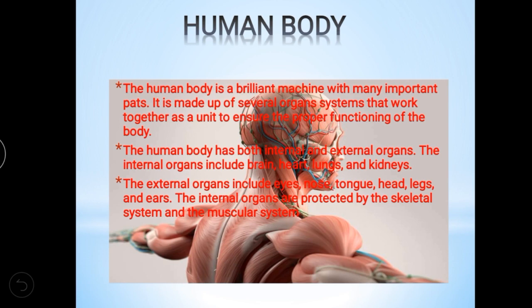The parts inside our body are protected by the skeletal system. For example, the brain is protected by the skull — it is a skeletal system. Our heart is protected by the ribcage; you can feel that bone inside if you touch. So the inside body parts are protected by the skeletal system and the muscular system.